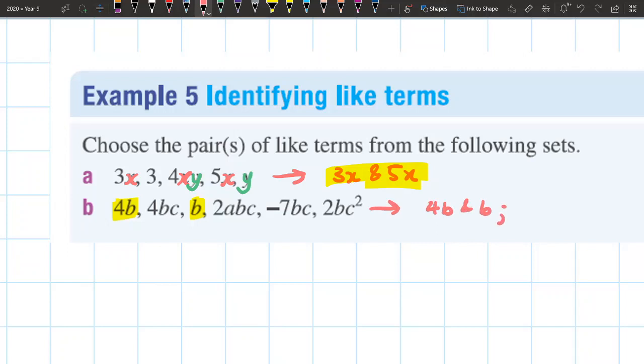Is there any other terms that just have b and c in it? 2abc, nope, they have a and c. -7bc, nope, that has a c as well. 2bc², nope, it has a c² at the end. So the first set is just these two that I've highlighted: 4b and b.